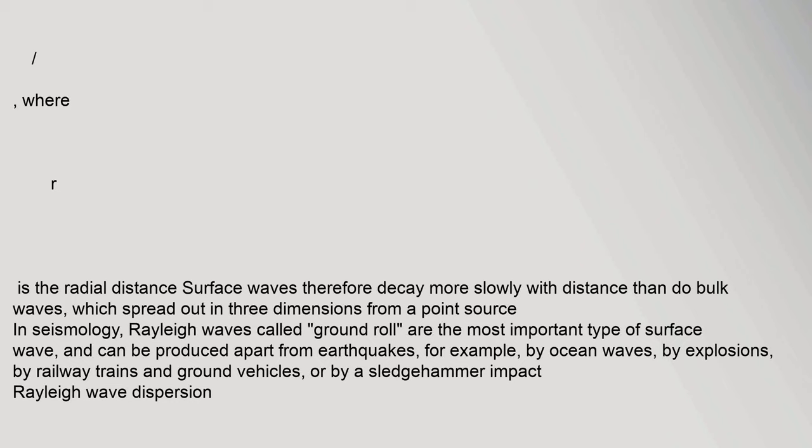Surface waves therefore decay more slowly with distance than do bulk waves, which spread out in three dimensions from a point source. In seismology, Rayleigh waves — called ground roll — are the most important type of surface wave, and can be produced apart from earthquakes, for example by ocean waves, by explosions, by railway trains and ground vehicles, or by a sledgehammer impact.